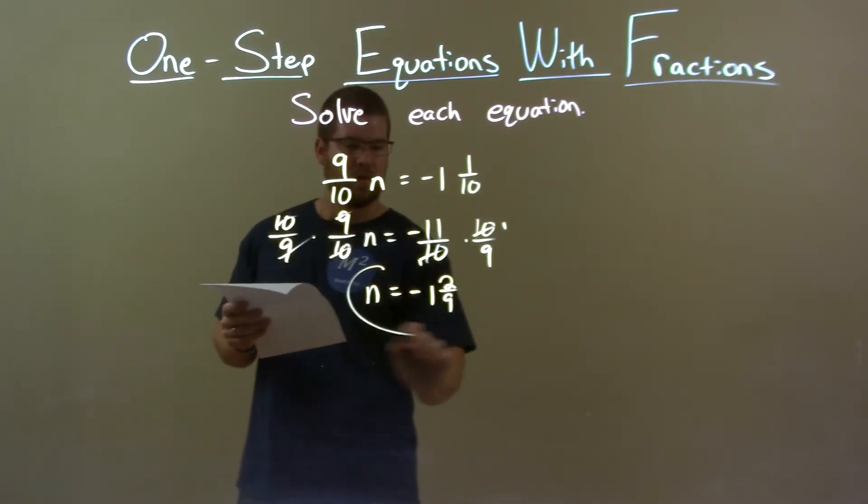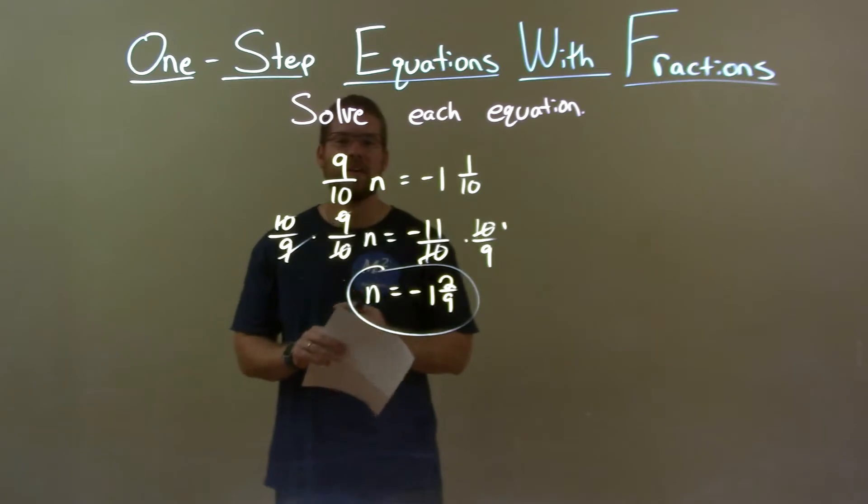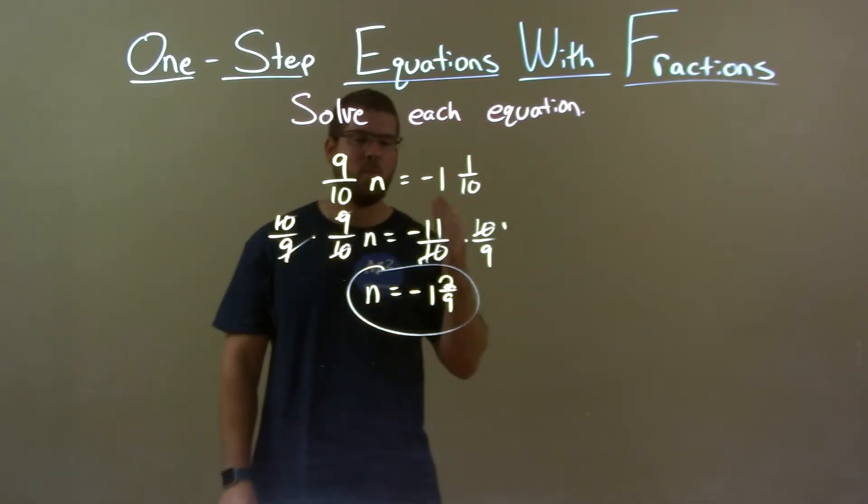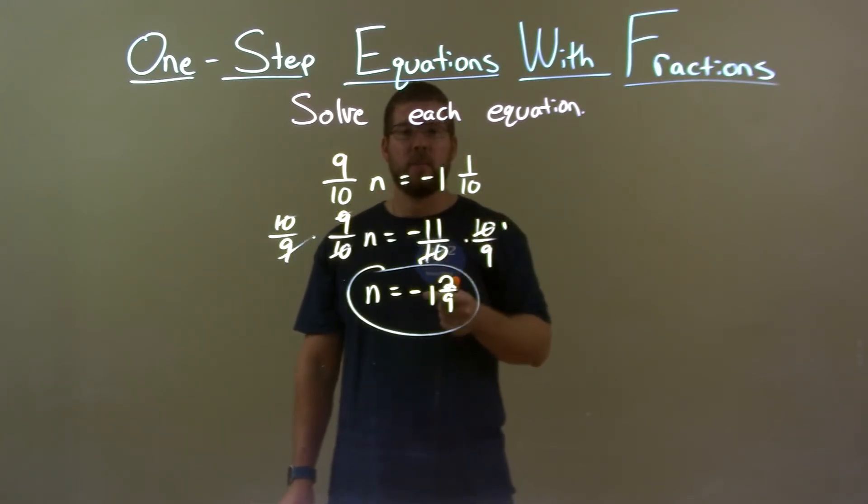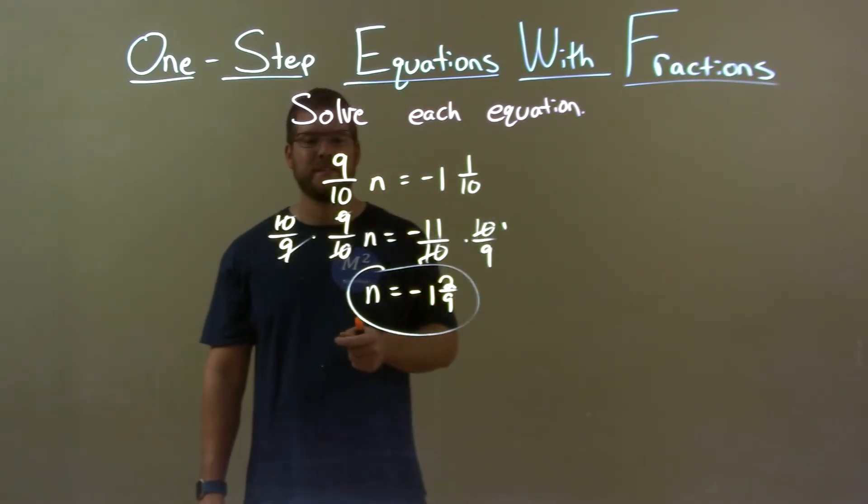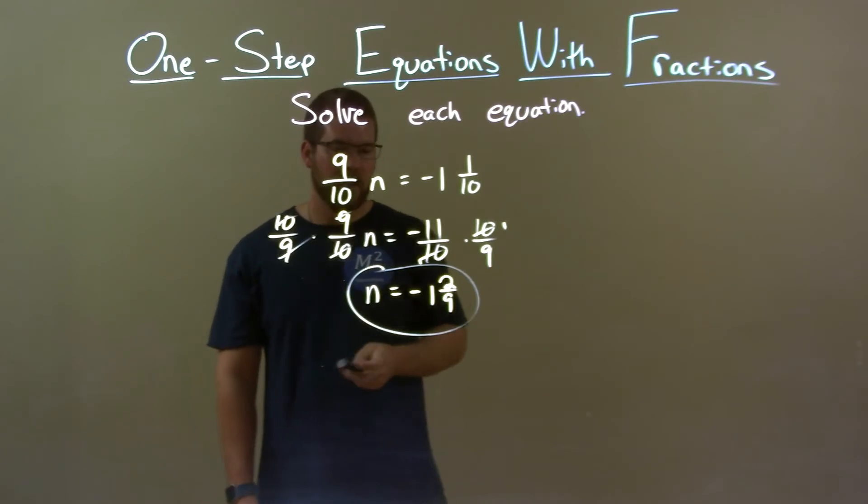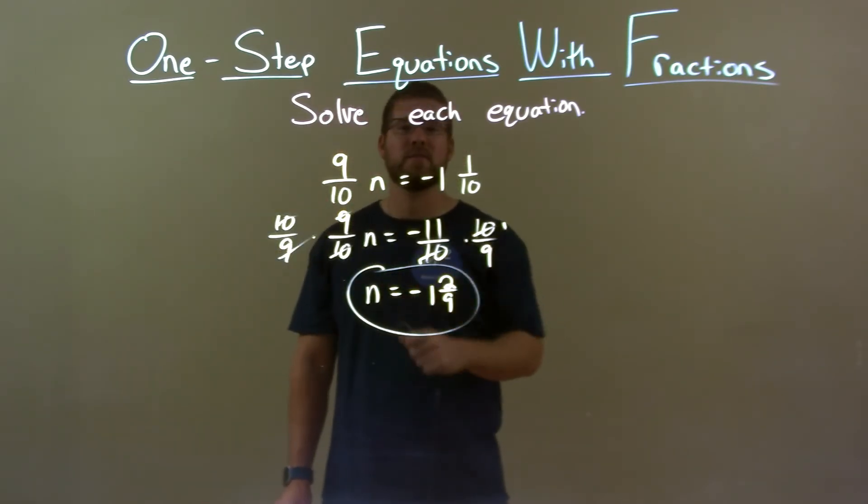All right. Quick recap. We're given 9 over 10n equals negative 1 and 1 tenth and we have to solve for n. I wrote the right hand side as an improper fraction then multiply both sides by 10 over 9. That gave me my final answer n equals negative 1 and 2 ninths.